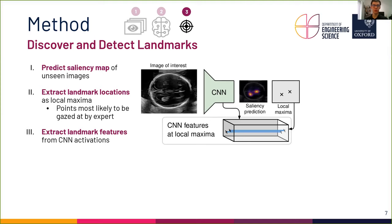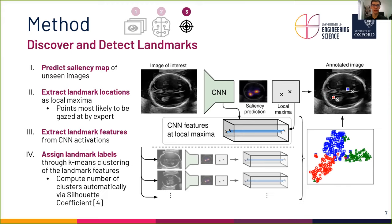As mentioned before, these feature vectors are semantic representations of the landmarks. So, as a last step, we assign labels to the landmarks by computing the landmark features for all images and clustering the features with a simple k-means algorithm. The number of clusters is determined automatically by maximizing the silhouette coefficient, which means maximizing the difference between the mean nearest cluster distance and the mean intra-cluster distance across all samples.